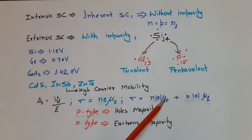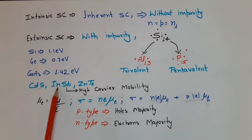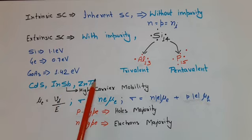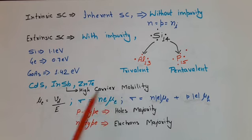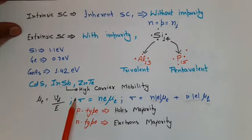CdS (cadmium sulfide), InSb (indium antimonide), and ZnTe — these three materials have high carrier mobility. After studying some basics of semiconductors, we now start a new topic, which is the Hall effect.